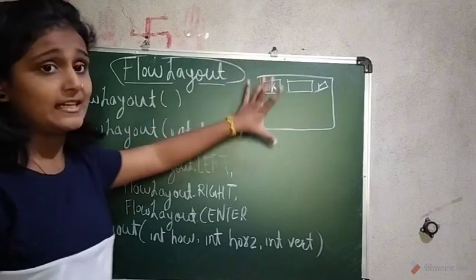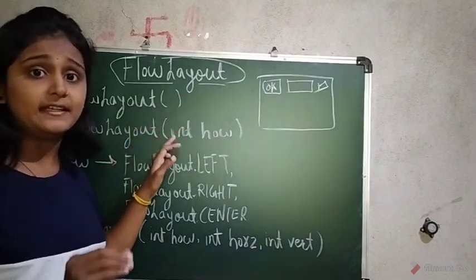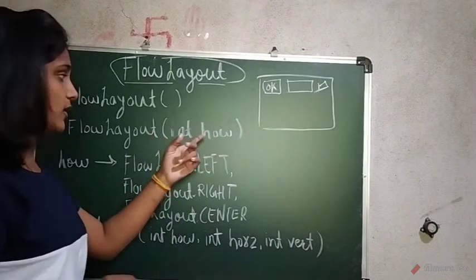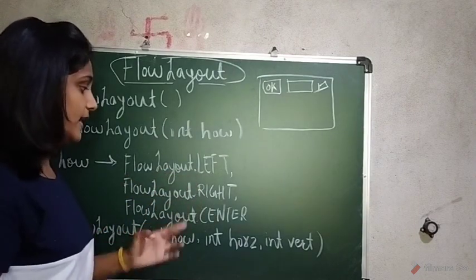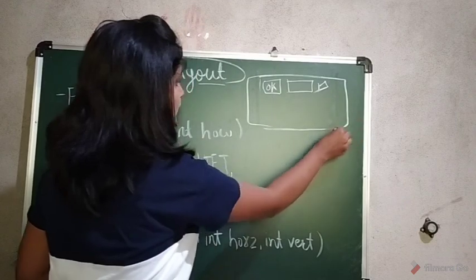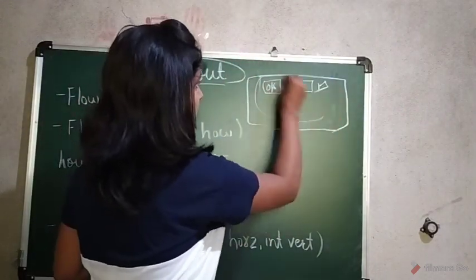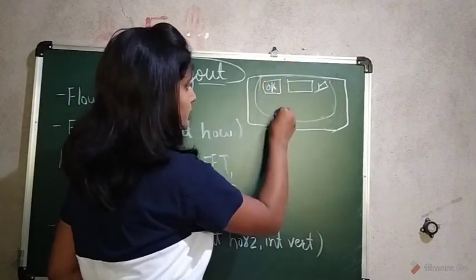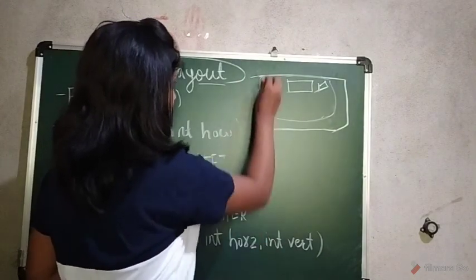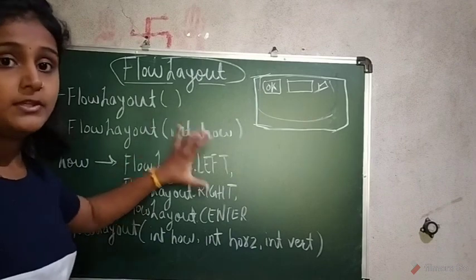Now we will see the FlowLayout constructors. FlowLayout() with no parameter creates a default flow layout. The next one is FlowLayout(int align), where the constants are FlowLayout.LEFT, FlowLayout.RIGHT, and FlowLayout.CENTER. If you pass FlowLayout.CENTER, the components will be arranged at the center from left to right, top to bottom. If you pass LEFT, all the components will be arranged from the left side. This is the default layout, and we use these constants as per the user's requirement.